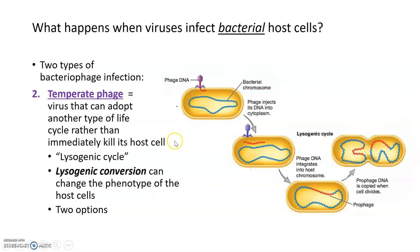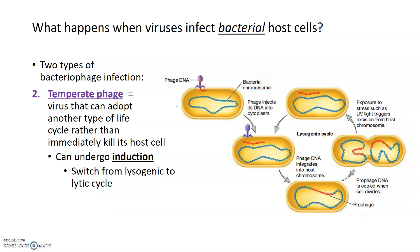During the lysogenic process, temperate phages are technically dormant and not making new virions, but they can change the phenotype of the host cell through a process called lysogenic conversion. One thing a temperate phage typically does when it enters the lysogenic cycle is cause this conversion, preventing the bacterial host cell from being infected by other viruses — essentially staking its claim on that host cell. Temperate phages can remain in the lysogenic cycle for their entire lifespan, but they also have the option to enter the lytic cycle.